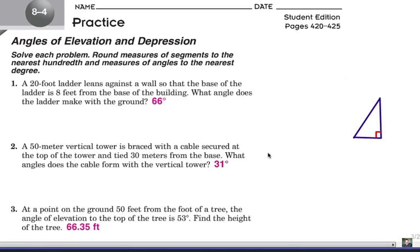Looking at number 2, you can see the answer is 31 degrees, but how do we get that? We have to label our triangle very carefully on this one. A 50 meter vertical tower, so let's say that this is the tower, 50 meters straight up. It does form a right angle with the ground, we're going to have to assume that.